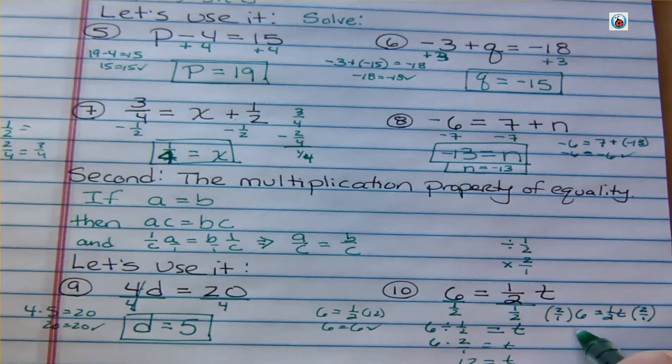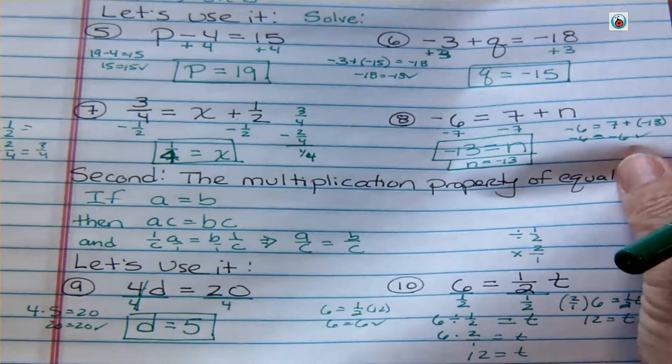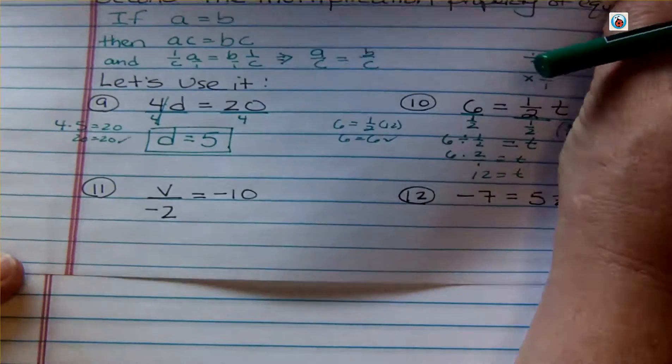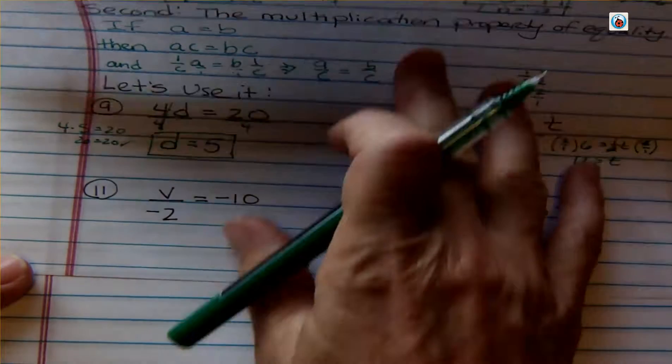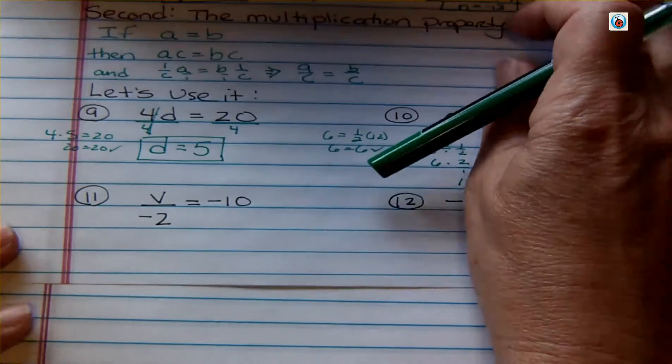2 times 6 is 12. And the halves cancel. And that's T equals 12. So that's another way to do that, but a little simpler way. Okay. Sorry, that was going off the page there.